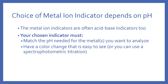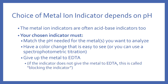You must ensure your indicator will give the metal up to EDTA. If the indicator binds the metal too strongly and doesn't release it, this is called blocking the indicator — and that's a bad thing. You could also use a spectrophotometric titration, monitoring absorbance of light to track the color change if it's not easy to see visually.